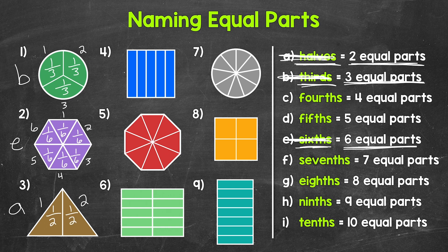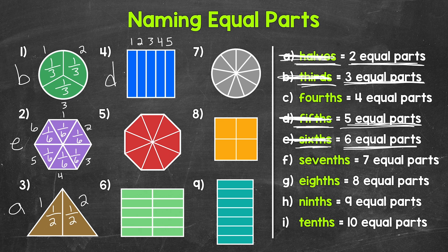Next, number 4, we have a square — that's our whole — and it has been divided into 1, 2, 3, 4, 5 equal parts. We call 5 equal parts fifths. So let's put a D next to number 4 and cross off fifths. Each one of those equal parts is 1 fifth of the whole square.